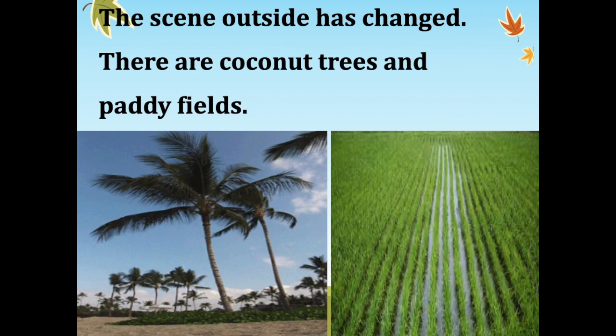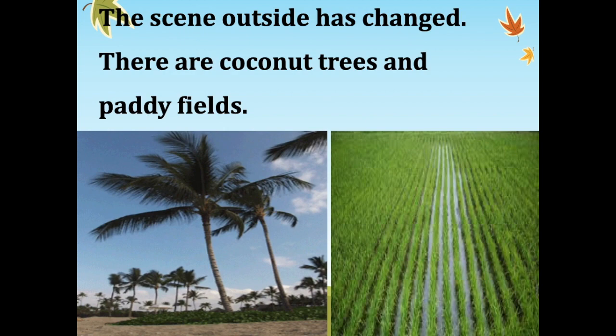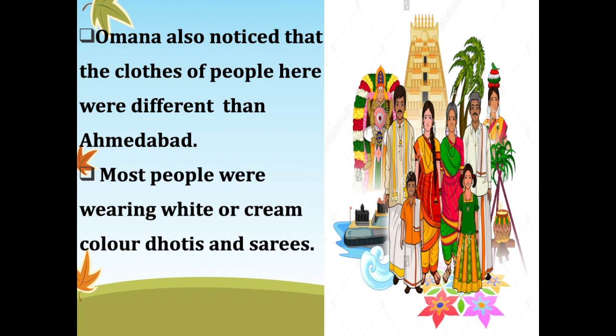The scene outside had changed — there were coconut trees and paddy fields all around. Omana also noticed that the clothes of people here were different from Ahmedabad. Most people were wearing white or cream-colored dhotis and sarees.